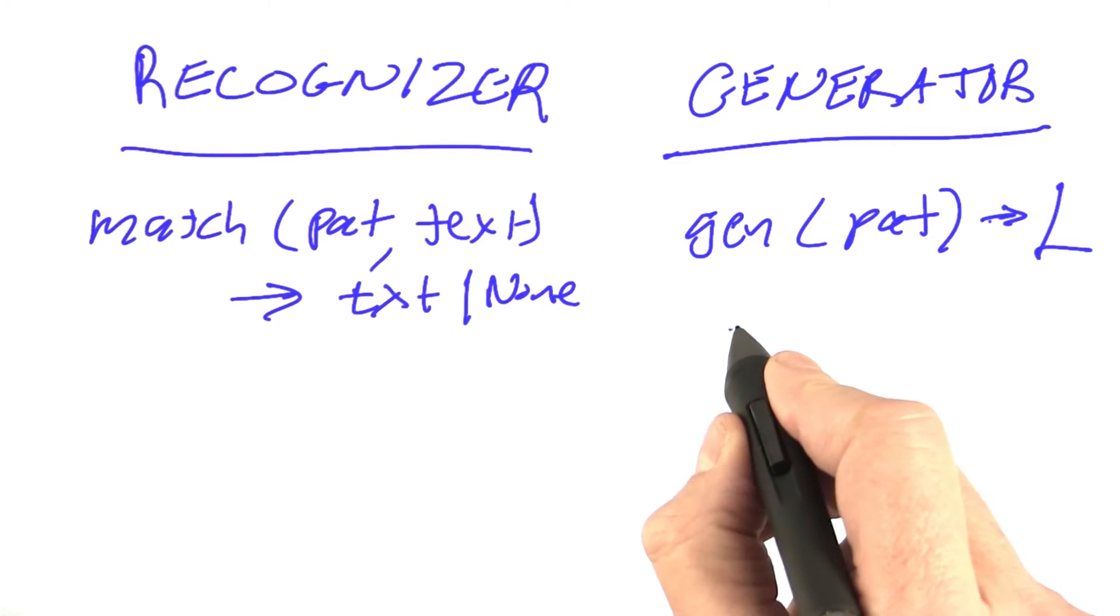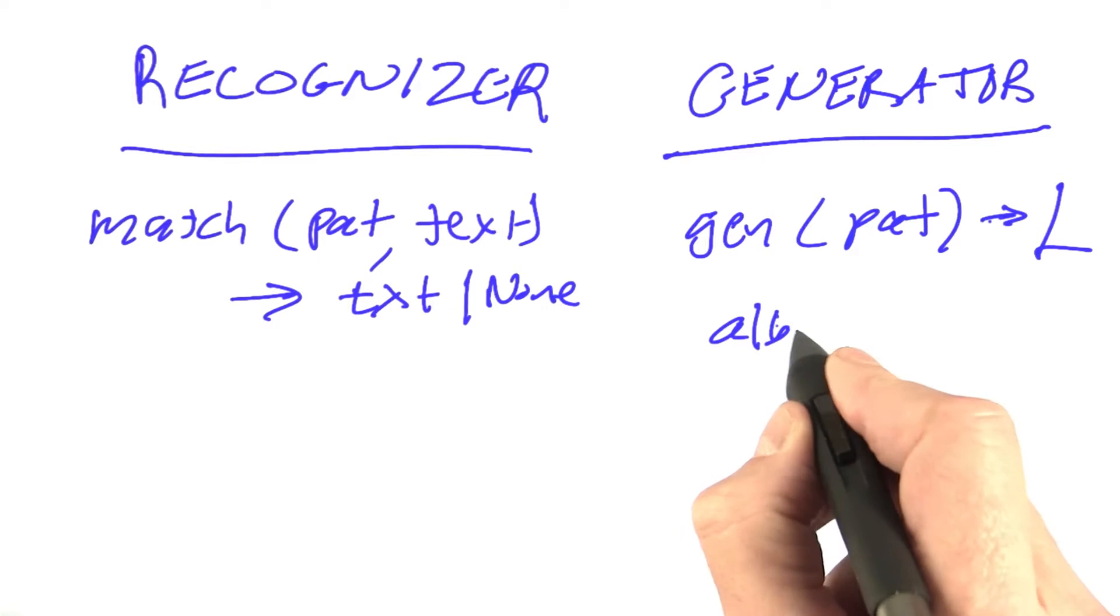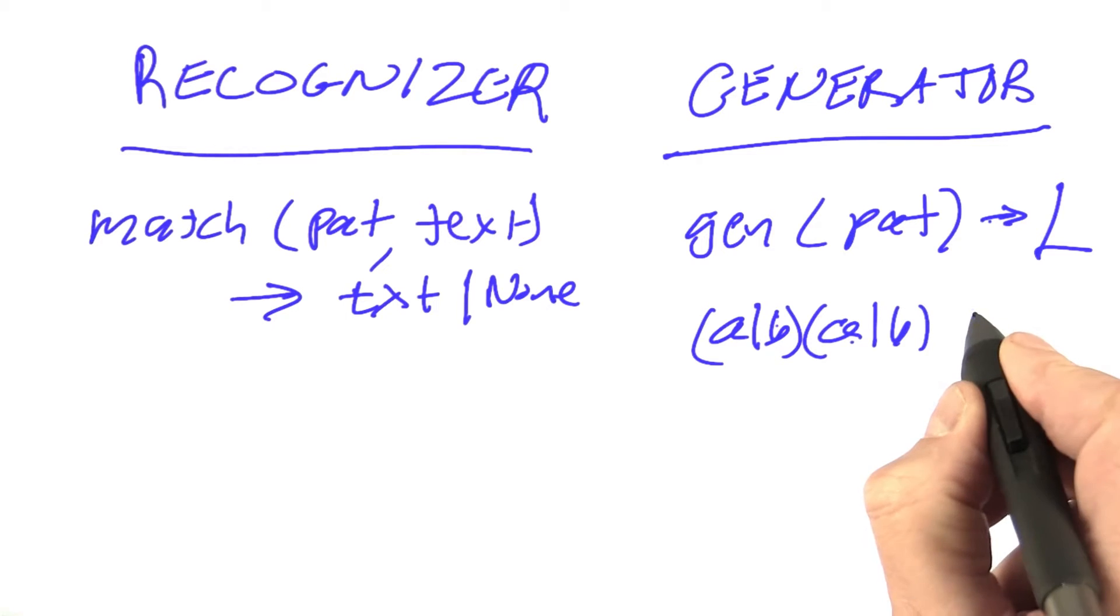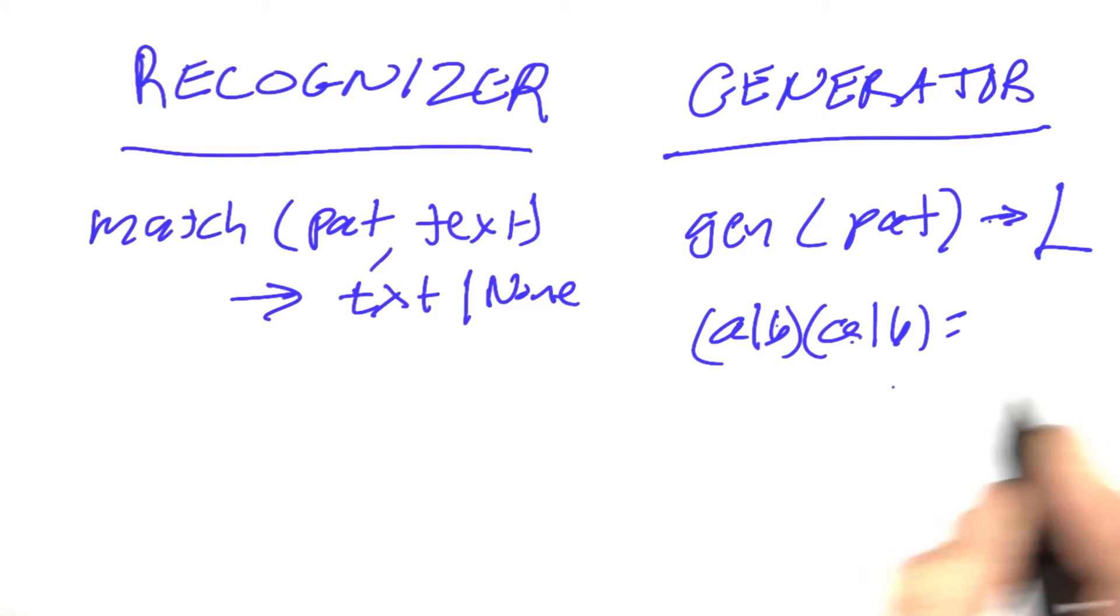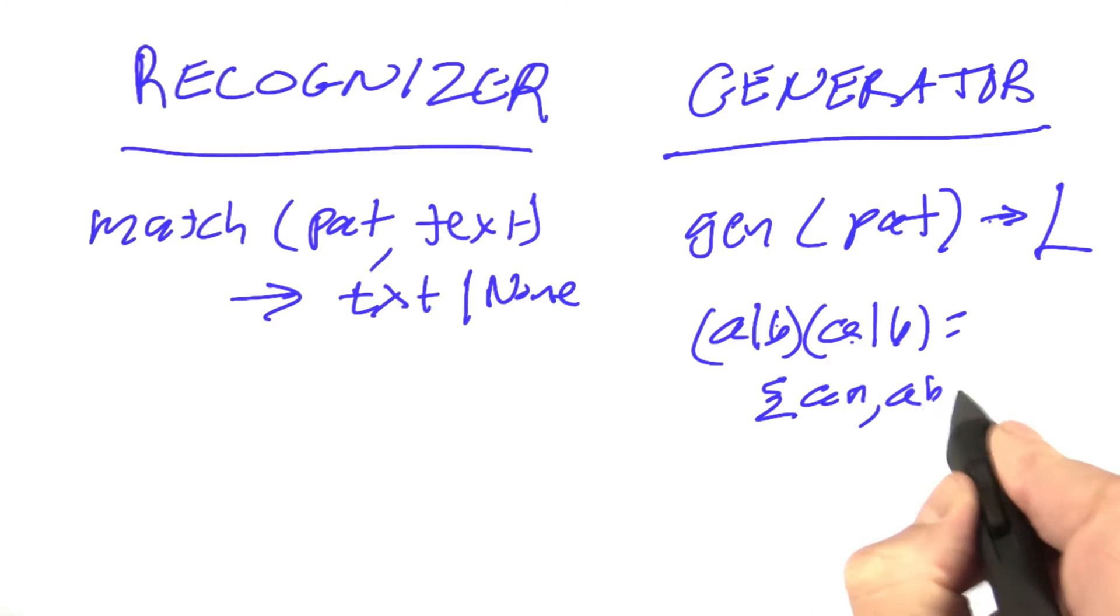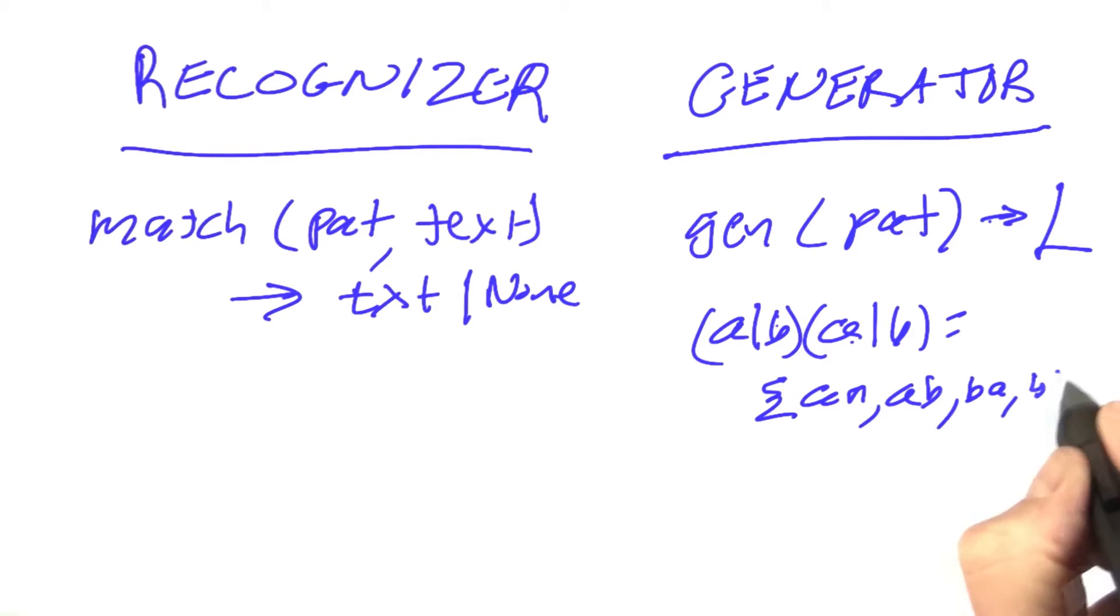For example, the pattern A or B sequenced with A or B—that defines a language of four different strings: AA, AB, BA, and BB.